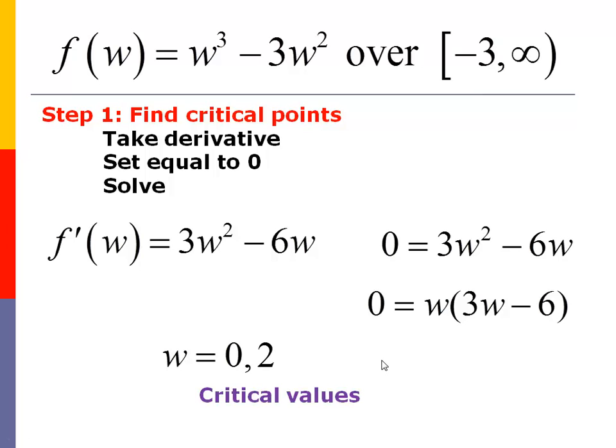And so then what we have here are zero and two are critical values. These are, in this case, the Ws when things happen. So these are our potential max or mins besides the endpoint.